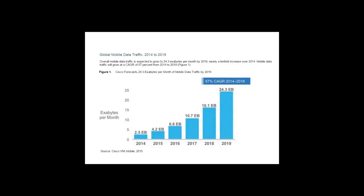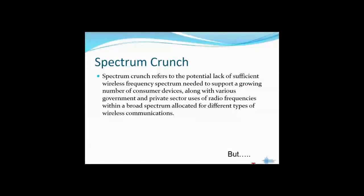As per Cisco forecast, overall mobile data traffic is expected to grow tenfold by 2019. We can conclude that very soon all the present allocated channels won't be enough to handle such a huge volume of data. This demand for extra spectrum is technically termed as spectrum crunch — referring to the lack of sufficient wireless frequency spectrum required for communication among a growing number of consumer devices.